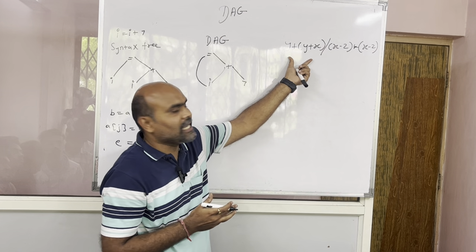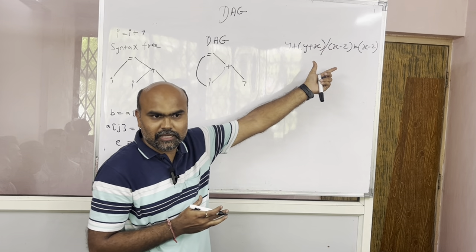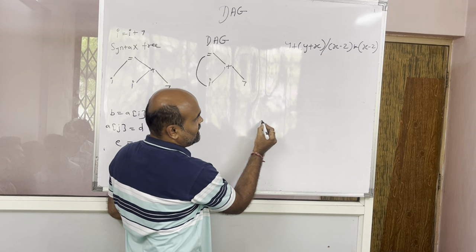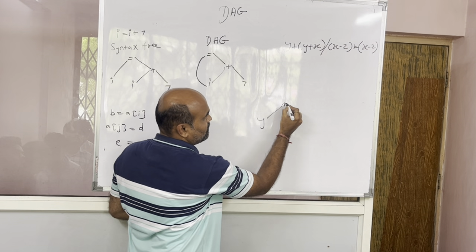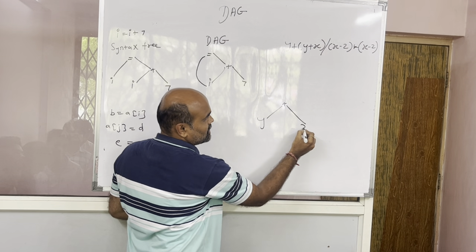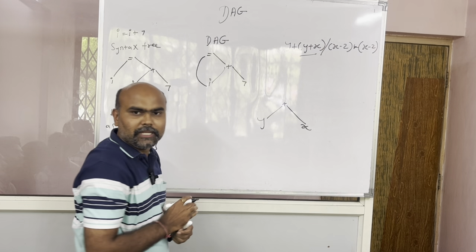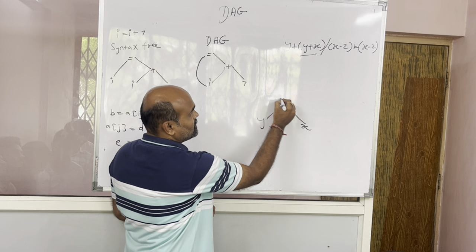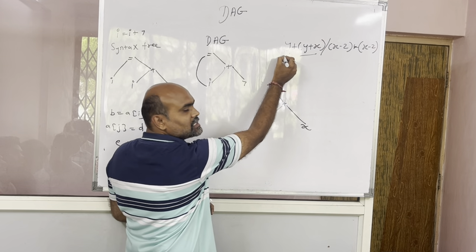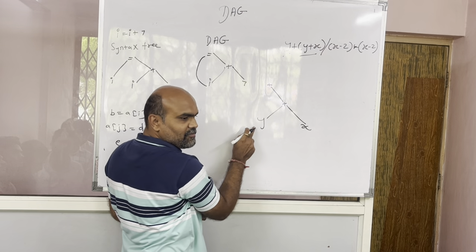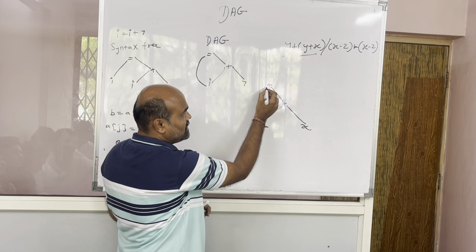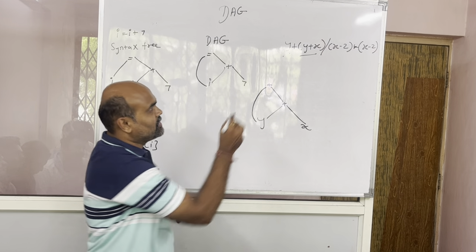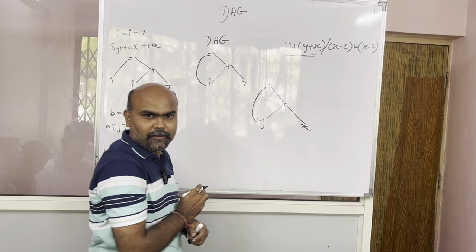Sabse pahle, starting from left to right, hum chalenge. Yaha pe hum pehle nikalenge y plus x. So y plus x — yeh wala part humne yaha pe nikaal liya. Next, the next plus has y again, so yeh y hamare paas hai, yeh y yaha pe connect kar dete hain. So yeh haemara y+x waala expression ho gaya.